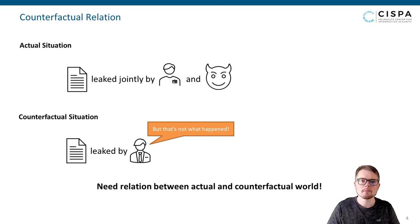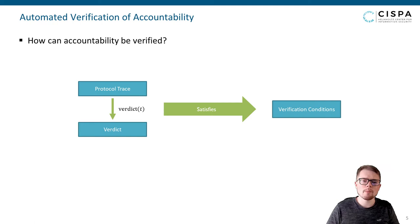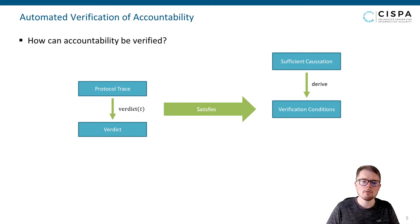So how can we verify that a protocol provides accountability for a security property phi? In the conceptual framework of Kühnemann and coworkers, the first step is to define a total function on protocol traces — the verdict function — which returns for every trace of the protocol a verdict containing the groups of parties which should be held accountable for violating phi. We then need to show that the protocol along with the verdict function satisfies a set of verification conditions rooted in causation, defining requirements on the verdicts returned. If the verification conditions hold with respect to the protocol, security property phi, and verdict function, then we say that the verdict function provides the protocol with accountability for phi.